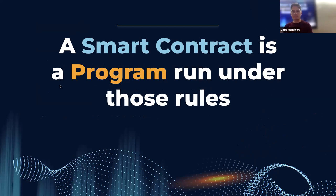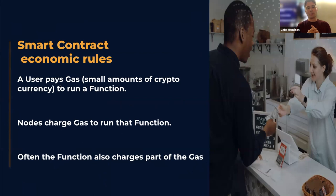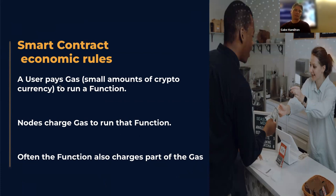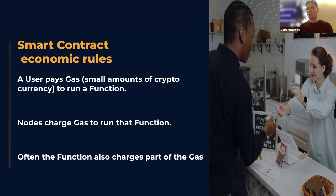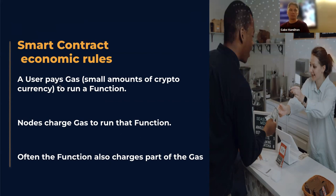What we really care about here are smart contracts. A smart contract is a program that runs under those economic rules. We add a couple of rules to make it work. A user who wants to use the smart contract is generally going to pay a small amount of cryptocurrency — we call that gas — where you pay for a contract to run or a function in a contract to run. Whoever's running the node charges that gas to execute the function. Often the program itself might charge a little part too, so there's incentive for developers as well.